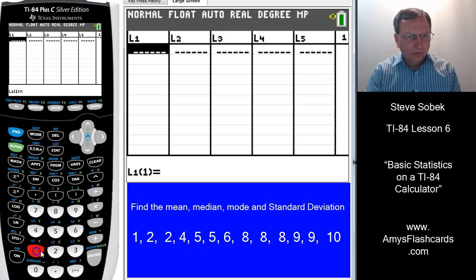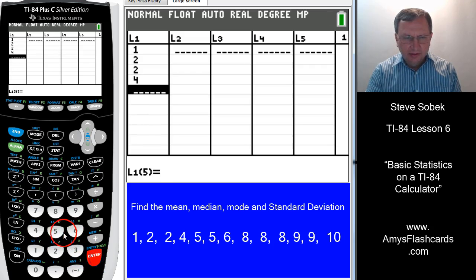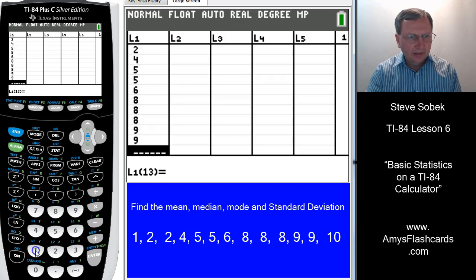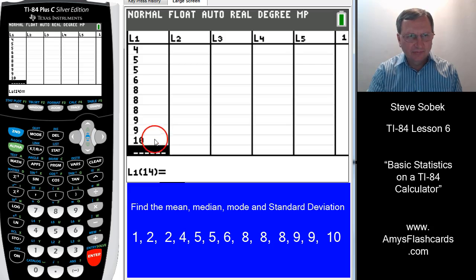So the data values would be one, enter, two, two, four, five, five, six, eight, eight, eight, nine, nine, and finally the top score was 10. Now the cursor here is now waiting for data value 14, and that's again an affirmation to us that we've already typed in 13, which is how many students there were in the class. Sometimes if you skip one, looking at this number will help you catch your mistake.